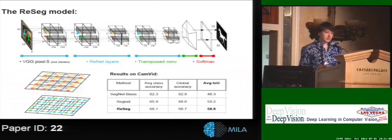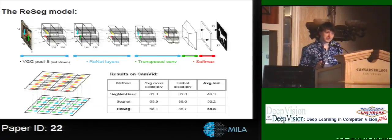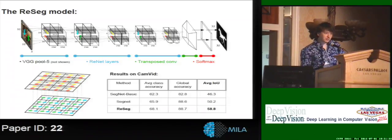We train the model on three different datasets: two foreground-background datasets — the Weizmann horses and the Oxford flowers — and then the full semantic segmentation on the Canvas dataset. We get state-of-the-art on all three of them.